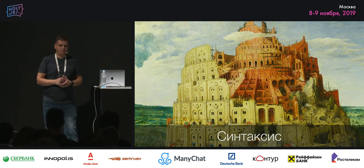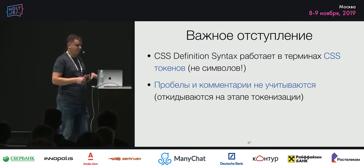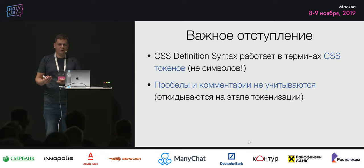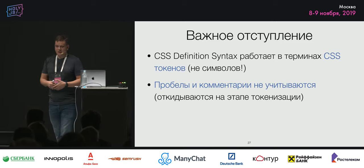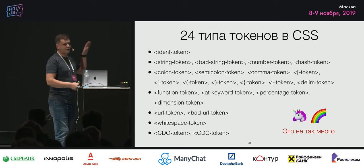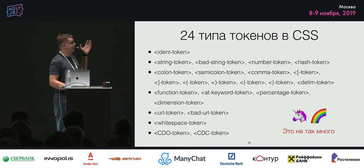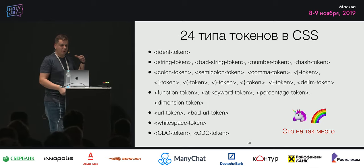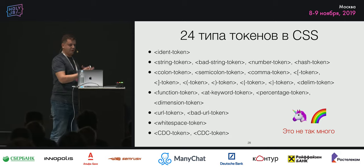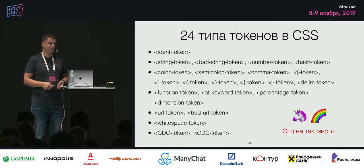Начнём с синтаксиса. Здесь нужно учесть один момент: сам синтаксис работает не с символами — он работает с токенами. То есть в CSS есть некоторый набор токенов, их всего 24 типа, не так много. Они простые: запятая — это отдельный токен, двоеточие — тоже отдельный токен. Идентификатор, строка, число — это все такие классические стандартные примитивы практически любого языка.